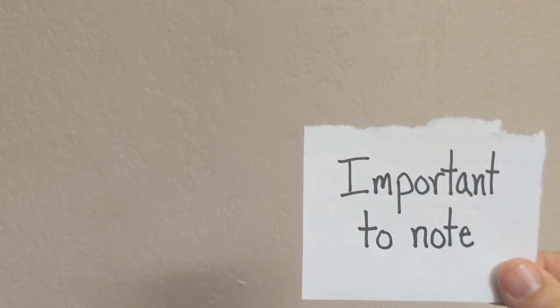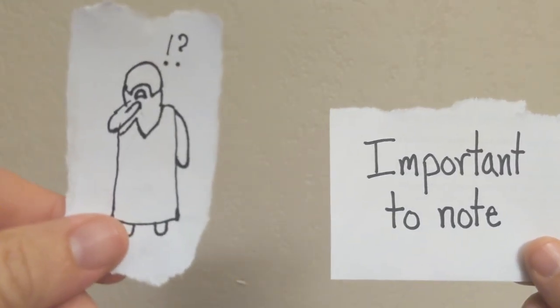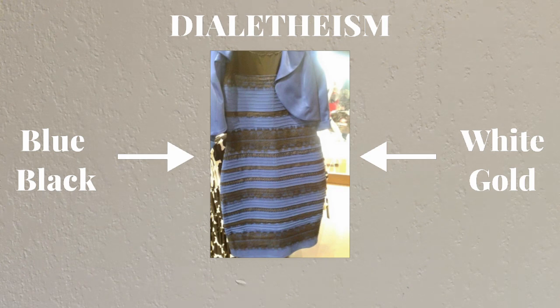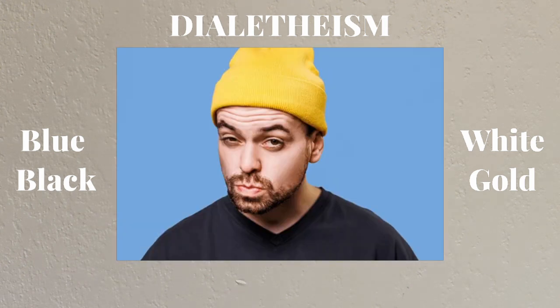but it is important to note that there is a sect of philosophers that maintain dialetheism, which rejects the law of non-contradiction and states that two opposing things can be true at the same time, which is difficult to wrap the brain around.